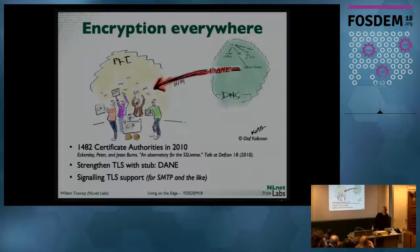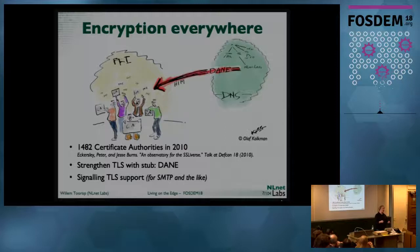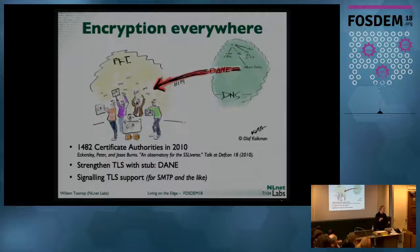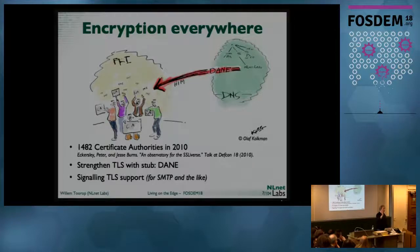Another nice use case for DANE is signaling of TLS support. For example, mail servers don't have direct interaction with the user. TLS for SMTP was opportunistic — you try it, and if you don't get it, you fall back to plain text, so an interfering middle box could just cause a fallback. With DANE, a mail server can check: this server does have TLS, it's verified. I looked it up in DNS and I should be able to set up a secure connection for delivering the email.